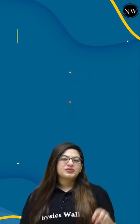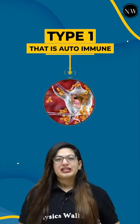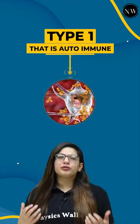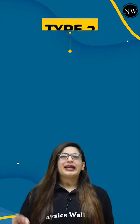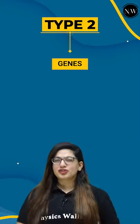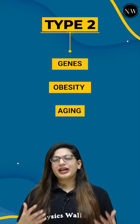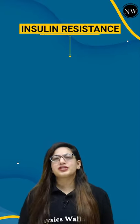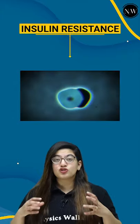Diabetes mellitus is of two types. Type 1, which is autoimmune, where your immunity destroys your insulin-producing cells. And Type 2, which can occur due to genetics, obesity, or aging. This is insulin resistance, meaning your body's cells forget to respond to insulin.